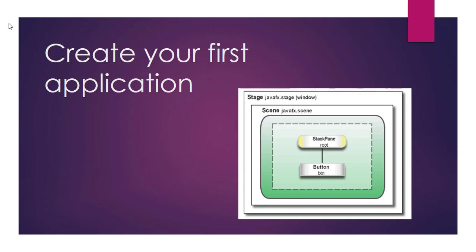In a JavaFX application, when we create a new JavaFX application, we need to learn some concepts. First, we create one component — for example, a button. This button we have to add in our pane, like a grid pane or stack pane. This pane is called the root. Our component is added in the root, our root is added in our scene, and the scene is added in our stage.